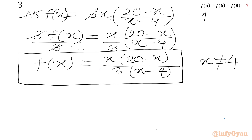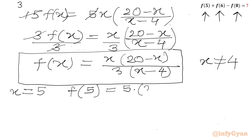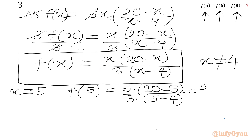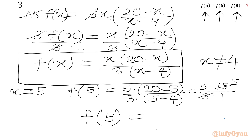Now we have to calculate f(5), f(6), and f(8). Plugging in x = 5: f(5) = 5·(20−5) / [3·(5−4)] = 5·15 / (3·1) = 75/3 = 25. So f(5) = 25.